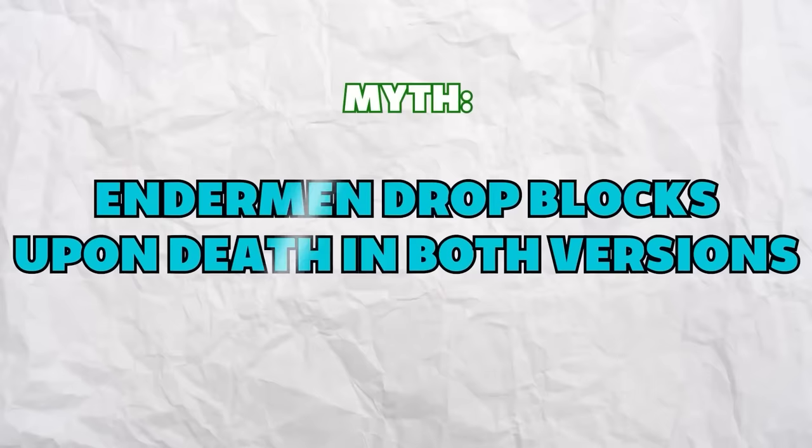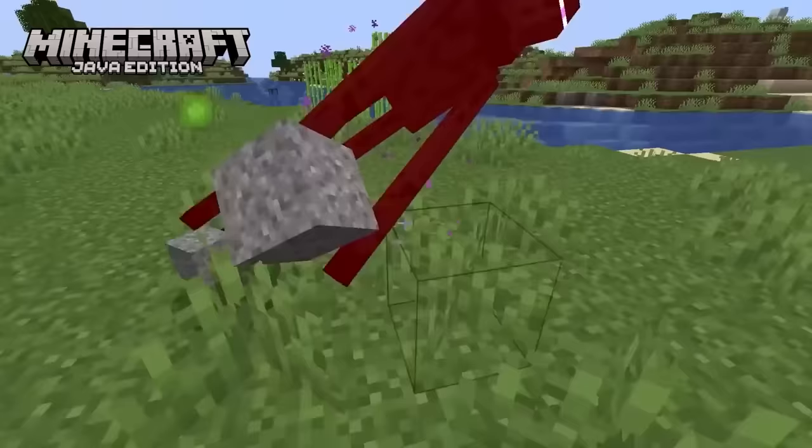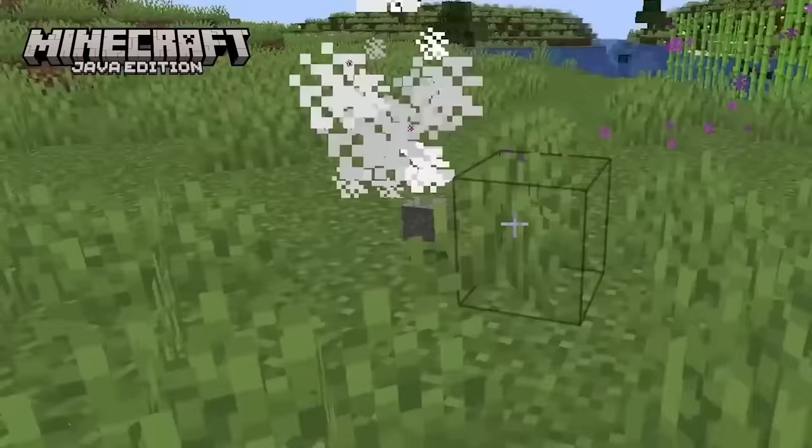Endermen drop the blocks they're holding in both versions. In Java, Endermen holding blocks will drop them when killed, while in Bedrock Edition, Endermen do not drop blocks they're holding upon death.